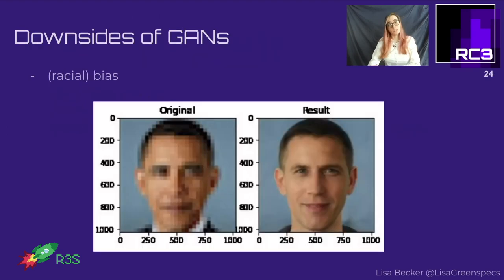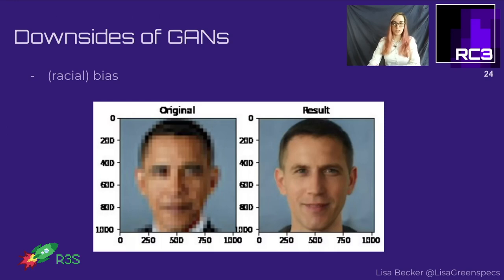So what are the downsides of GANs? One big problem is bias, and especially racial bias. Here on the left side you see a pixelated picture of former U.S. President Barack Obama that got up-sampled by Nvidia's StyleGAN algorithm into a very whitened version of Barack Obama.